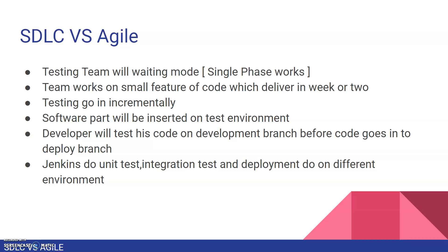In SDLC there is a difference between the development build and the testing build — the development team has a different build and the testing team has a different build, which means the integration part is missing. In Agile there is no difference between the dev and QA build; everyone works on the same build. This resolves build consistency issues, so the same bug found in dev is the same bug found in QA, closing the gap between dev and QA builds.